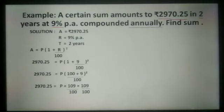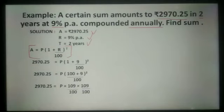Here, amount is Rs. 2970.25, rate of interest is 9% per annum, time is 2 years. We have to apply the formula: amount is equal to principal into 1 plus rate of interest raised to the power t. So, A is equal to P into 1 plus R upon 100 raised to the power t. Here we have to put the values.